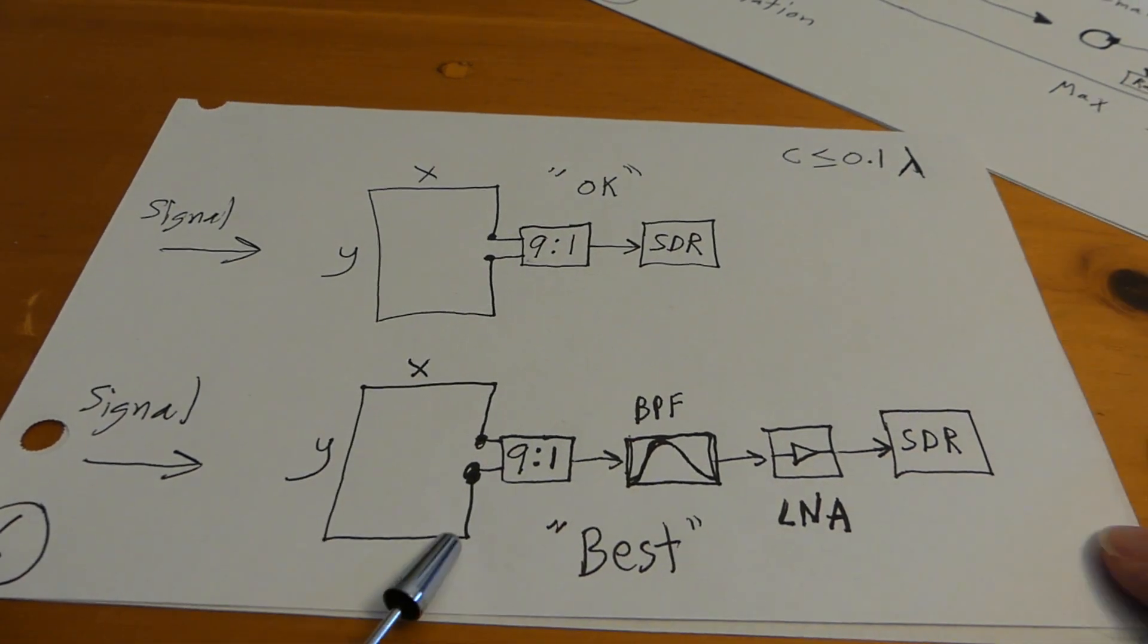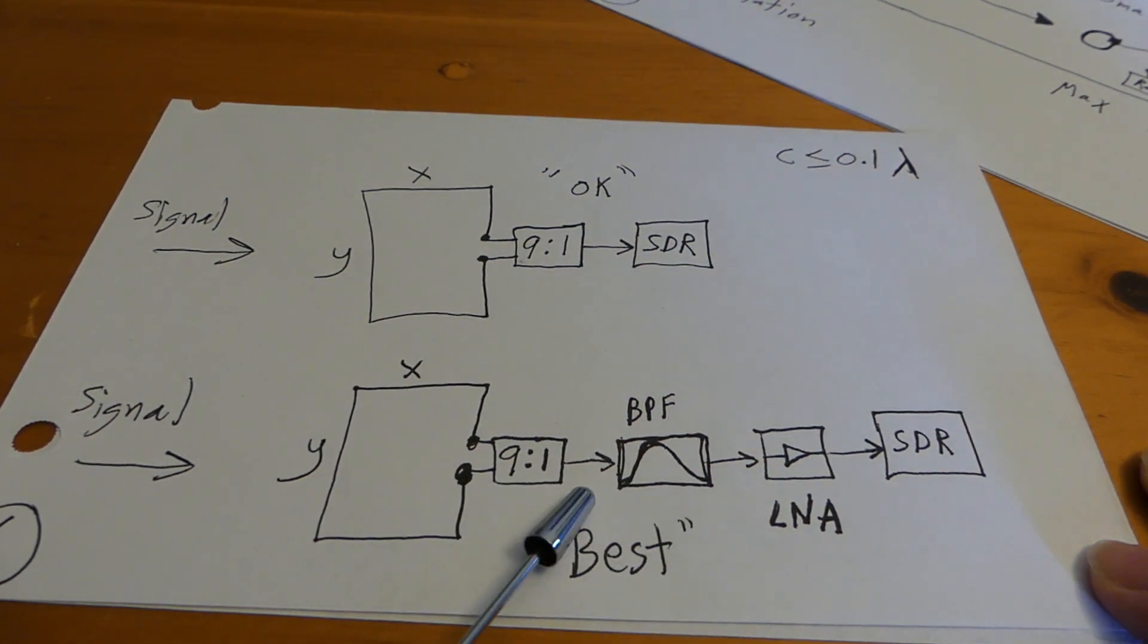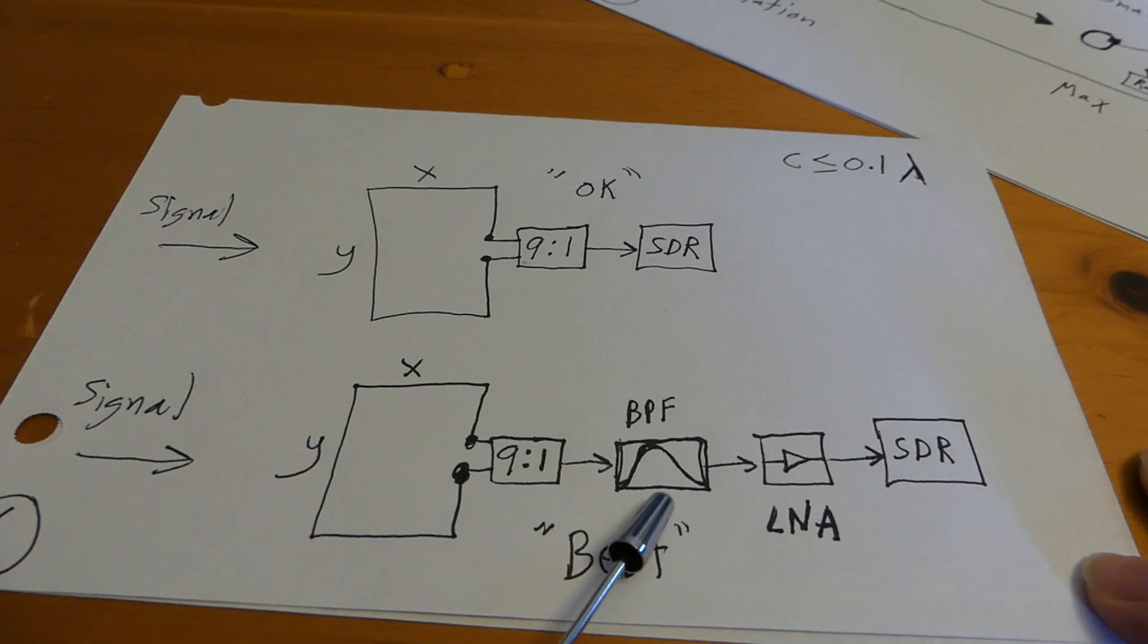However, this would be a much better setup. Mainly because if you are interested in, say, the 80 meter band, you would like to put an 80 meter band band pass filter here and then an LNA.